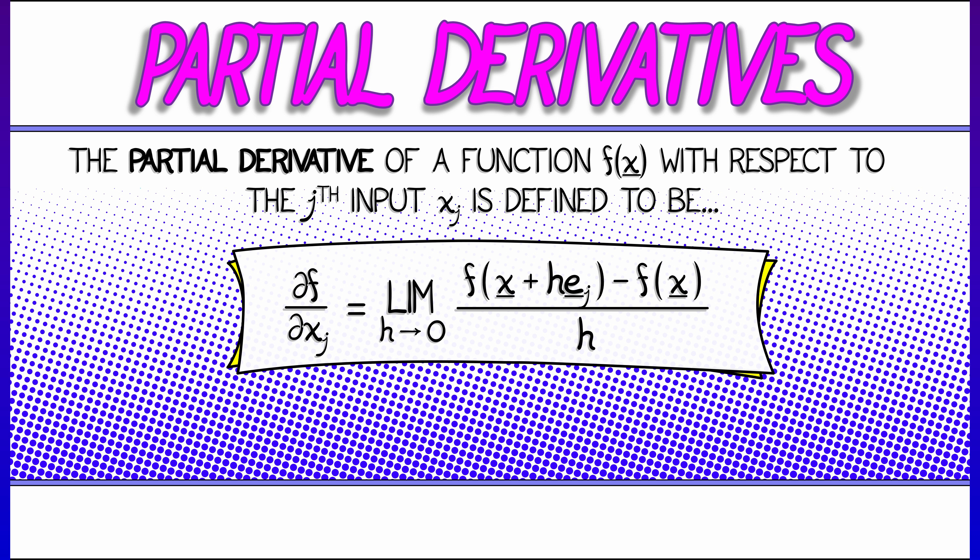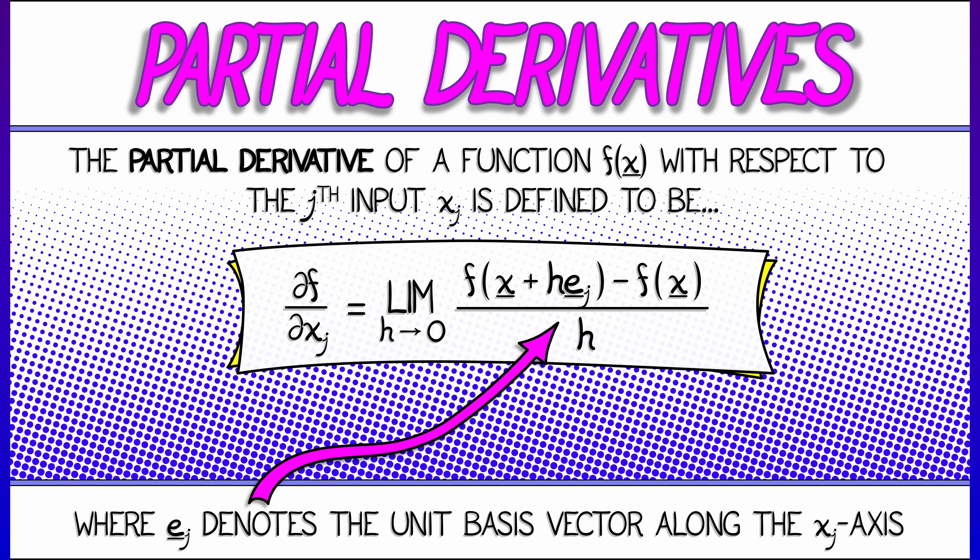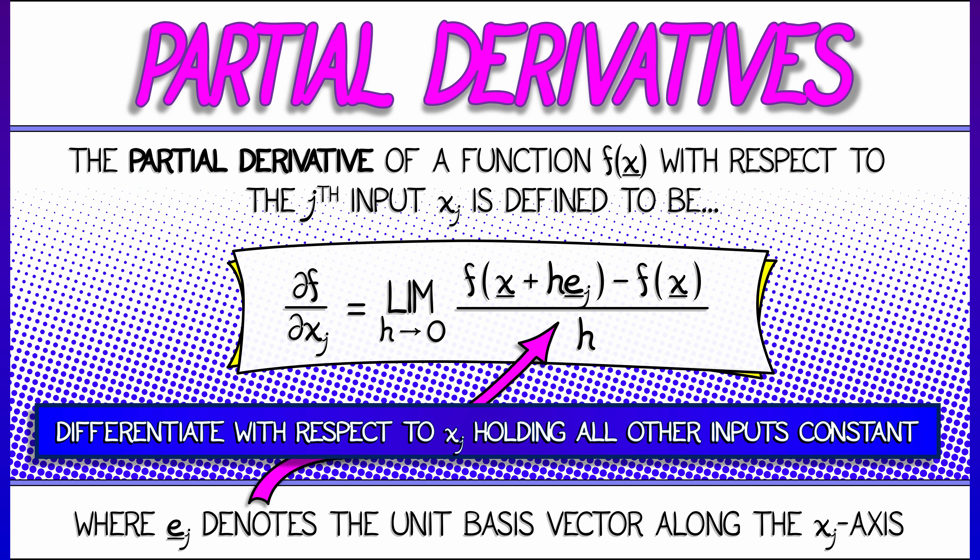with respect to the jth input x sub j, is defined to be — it's denoted ∂f/∂xⱼ, we'll talk about that in a minute. But the definition is something familiar to you: it is a certain limit, as h goes to zero, of f of x plus h minus f of x, all over h.